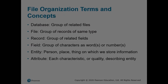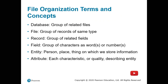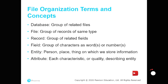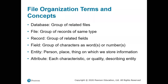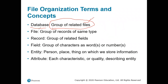The first topic in this chapter is about file organization in a database. You can organize data into a database, a normal file, a record, a field, an entity, and an attribute. A database is a collection — a folder for related files — so you can put files in it and easily retrieve them when needed.